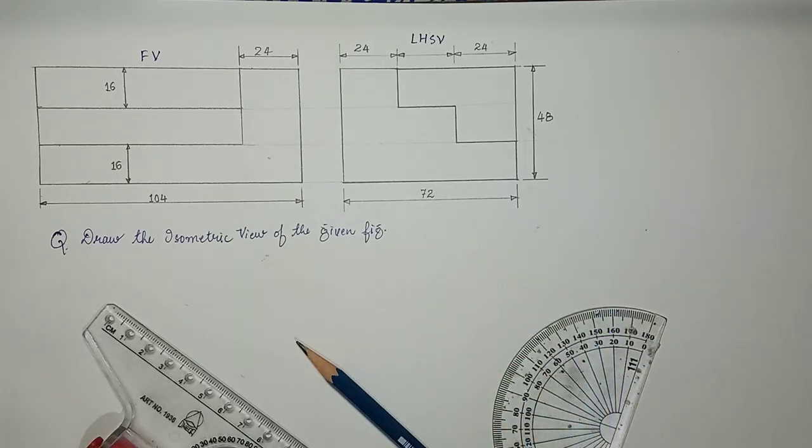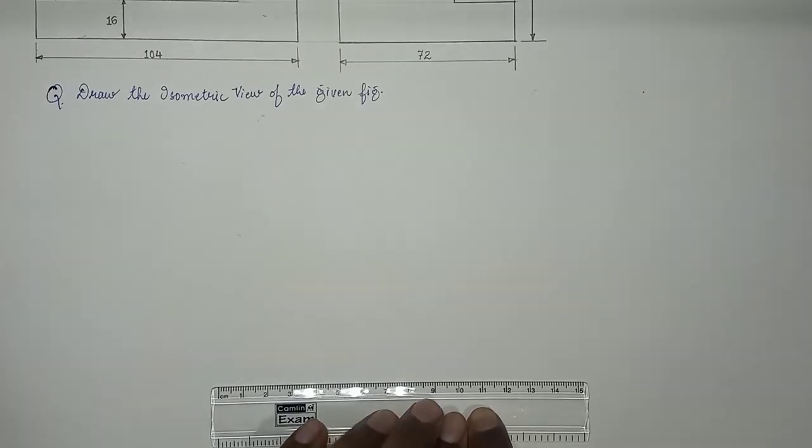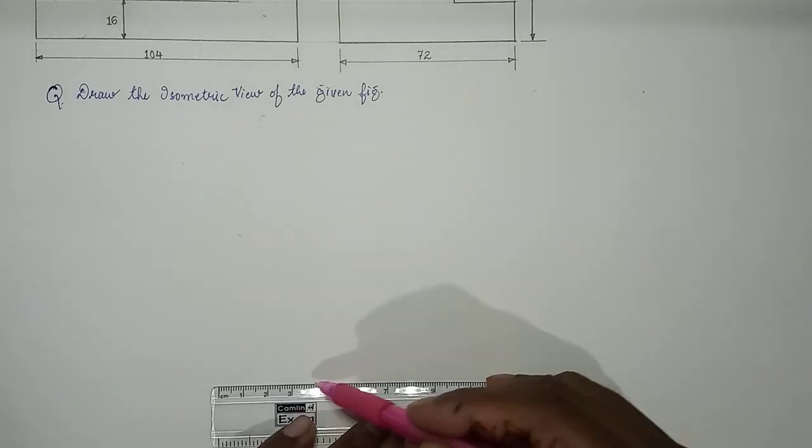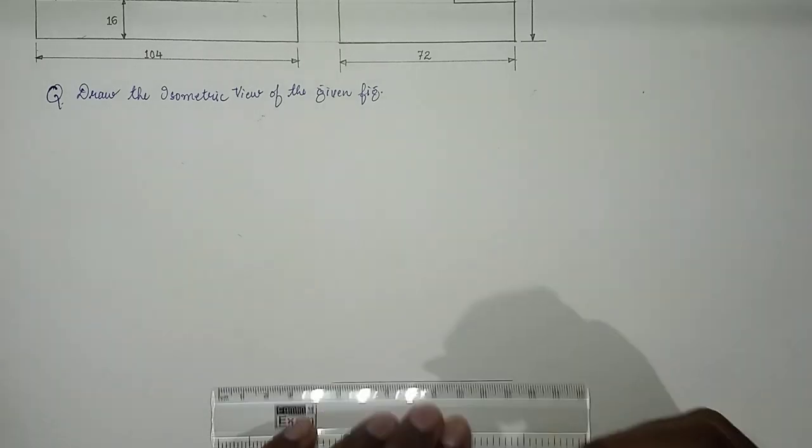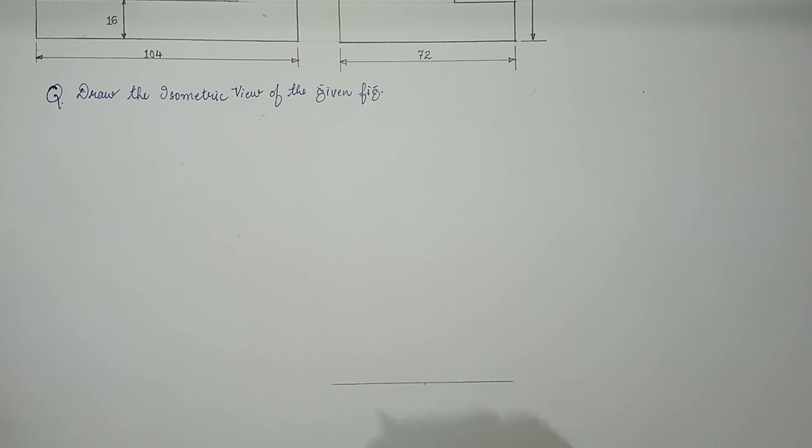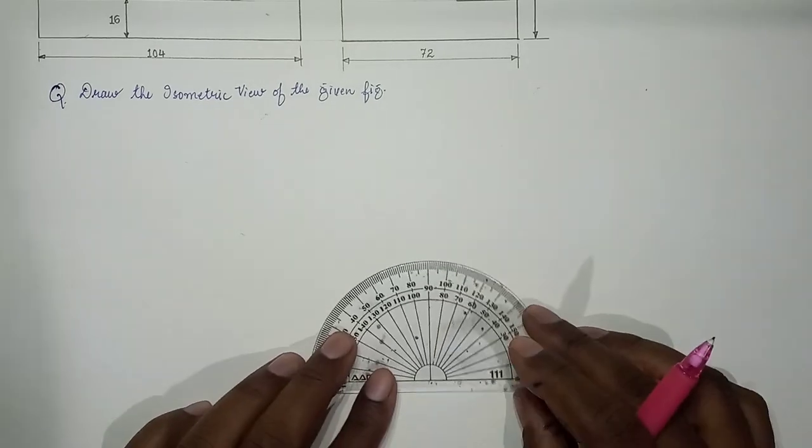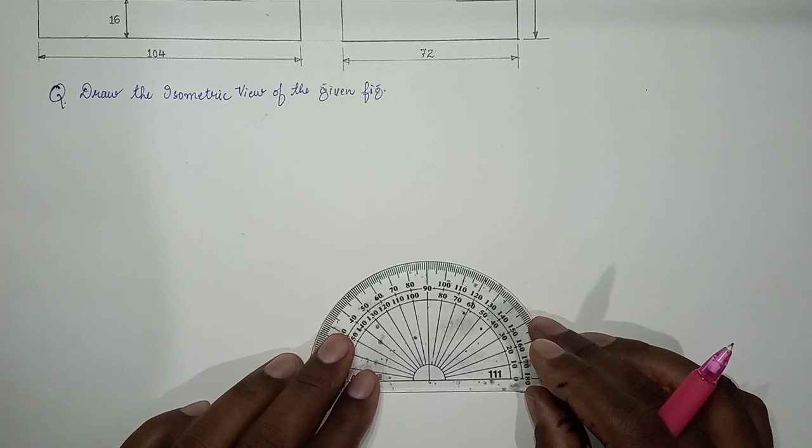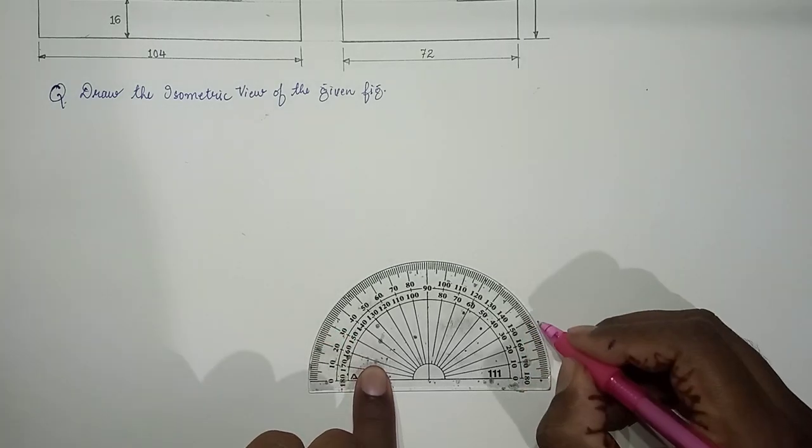So let's see how to make this. We draw a horizontal line and at a comfortable distance we make two lines at 30 degrees - one on this side and other on this side.